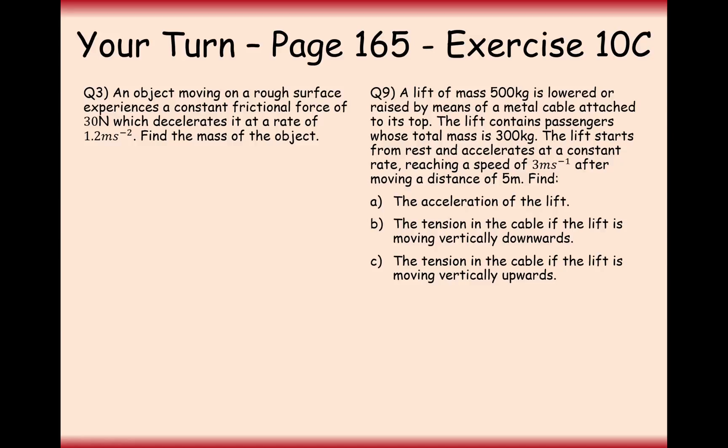Well done for having a go at these two questions. An object is moving on a rough horizontal surface, experiences constant frictional force of 30 newtons. Let's say it's moving to the right and it has its friction acting to the left. It decelerates at a rate of 1.2 metres per second squared. Find the mass of the object. That's pretty straightforward. We've got an F equals ma formula. We'll set left as positive, so it's 30 equals a mass that we don't know times 1.2, and dividing 30 by 1.2, we get 25 kilograms.